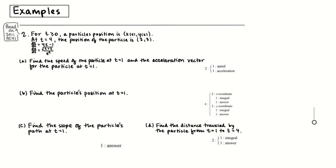The second free-response example is based on 2011 BC number 1. This also allows a calculator, but there's not much different here besides part A. I'll work part A for you, and then you should pause the video and try parts B, C, and D, checking your work against mine.